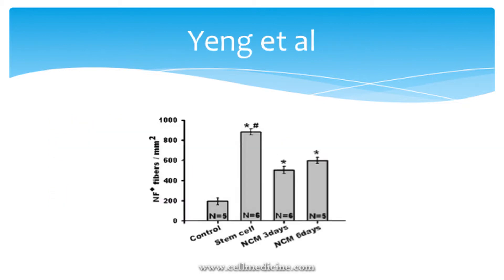There was a control on the left, and you can see the stem cell group showed more than a four-times increase in nerve fiber count over the control. The NCM—the conditioned medium from the cells—was also implanted and provided some benefit, but it wasn't nearly as good as when the actual cells were implanted. The cells were there secreting trophic factors right where they were needed for the spinal cord to repair itself.